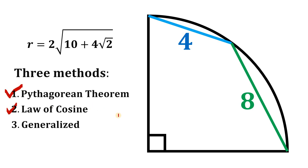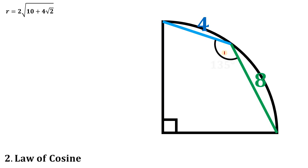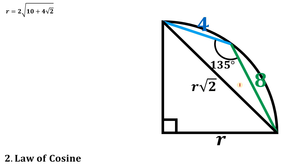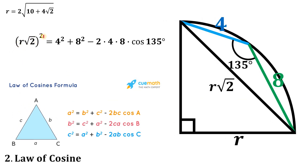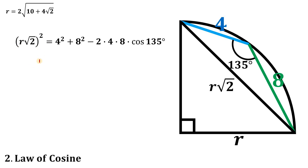Now for the second method using the law of cosines. We know this angle is 135 degrees, and drawing the hypotenuse gives us a side of r√2. The law of cosines states that the square of one side of a triangle equals the sum of the squares of the other two sides minus twice their product times the cosine of the included angle. So: (r√2)² = 4² + 8² − 2(4)(8)cos(135°).